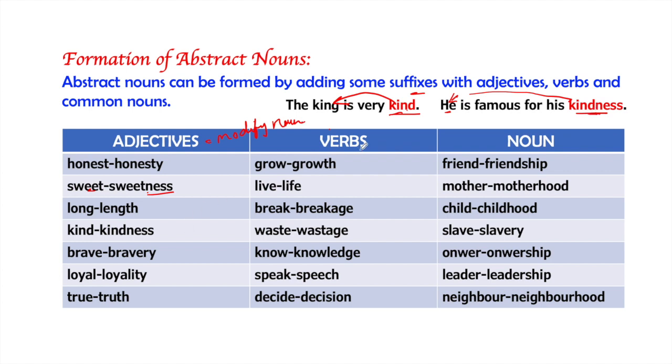We will see that how abstract nouns can be made through verbs. Verbs are the words which do action. Grow is a verb and with little moderation abstract noun can be formed, that is growth. Live, verb. Life is abstract noun which is made out of it. Break, breakage. Waste, wastage. Know, knowledge. Speak, speech. Decide, decision.